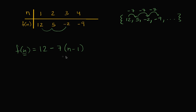Let's see if this works out. f(1) = 12 minus 7 times (1 minus 1) — that's zero — so it's just 12. f(2) = 12 minus 7 times (2 minus 1) = 12 minus 7 times 1, so we subtract seven once, which is exactly right. f(3) = 12 minus 7 times (3 minus 1) = subtract seven two times. This looks right. We've defined f explicitly for this sequence.